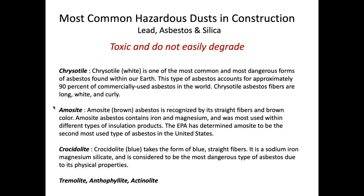The two chronic illnesses from asbestos are asbestosis or mesothelioma. There are six types of asbestos in bold — those six bolded are the six different types of asbestos, and the three with descriptions here are the most common.